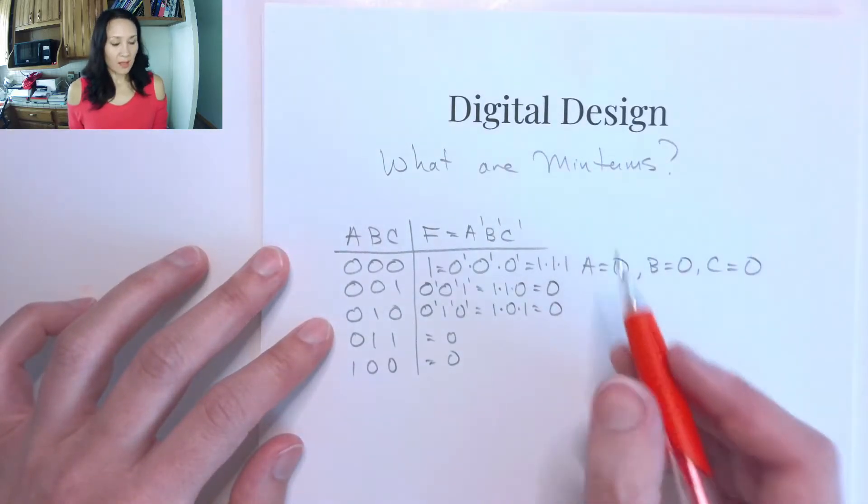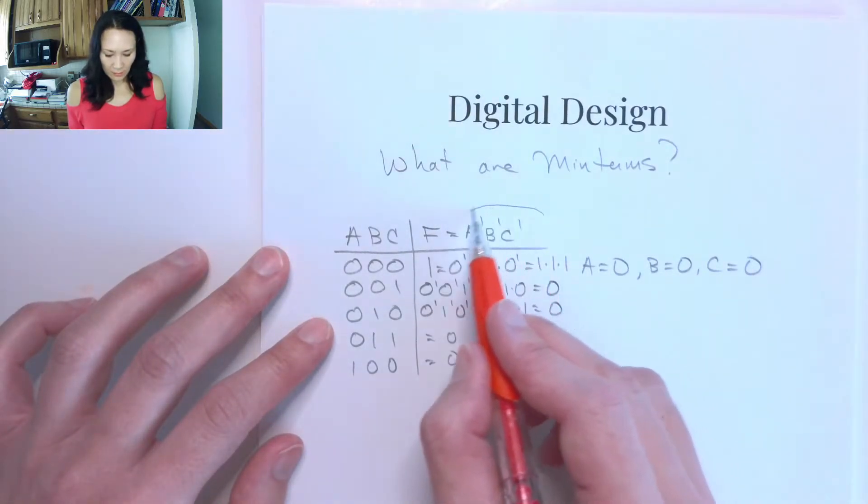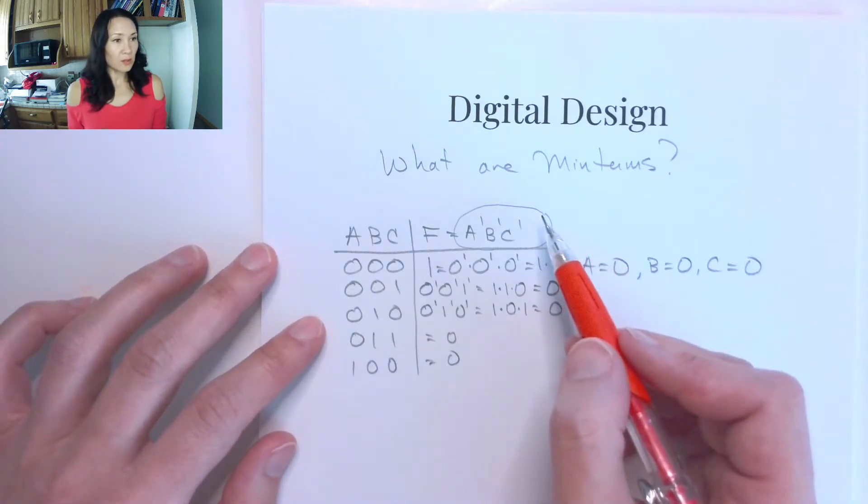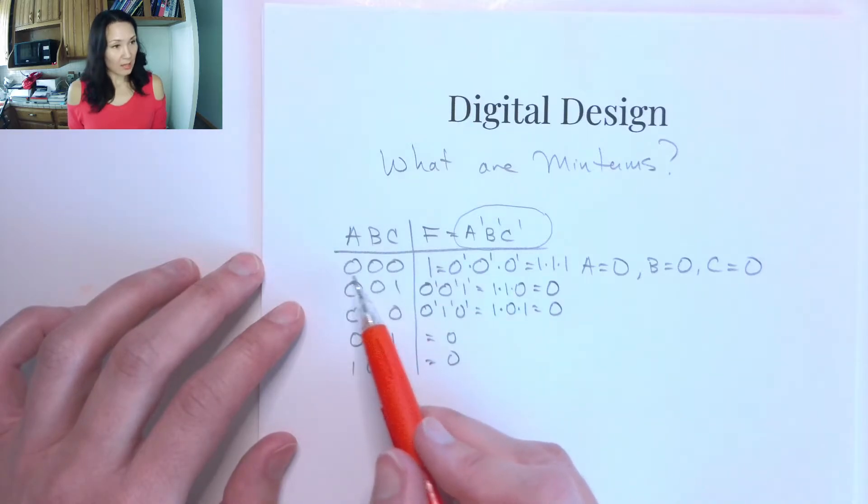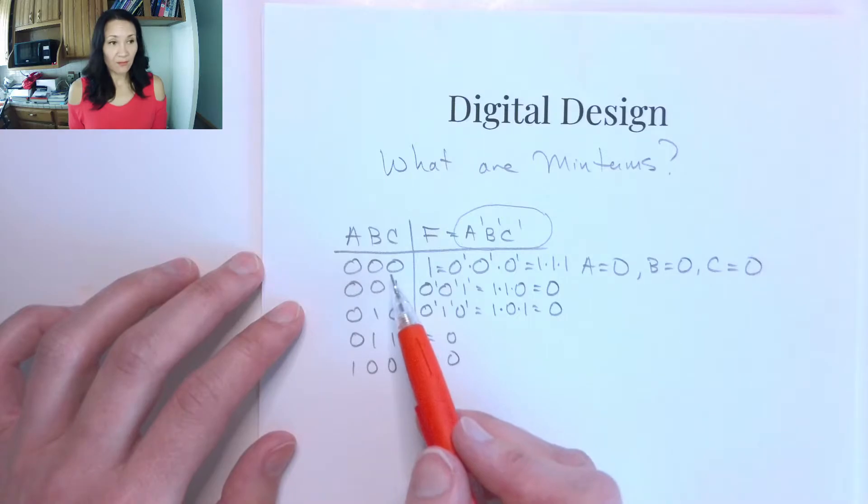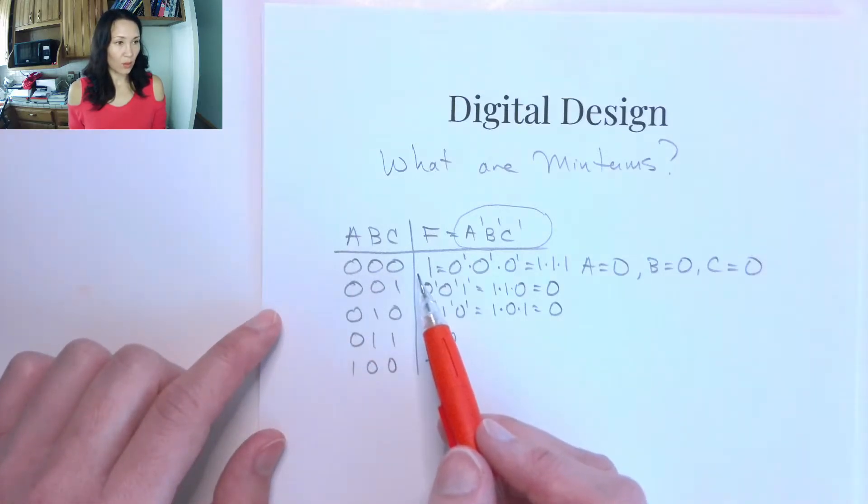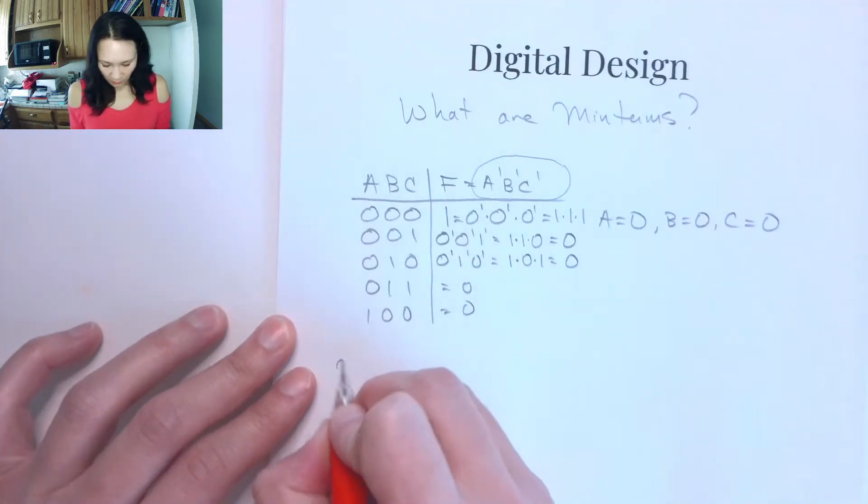So that means that this term right here is the first minterm. And this is a minterm that corresponds to inputs A equals 0, B equals 0, C equals 0. And the definition of a minterm is it's the product term that evaluates to 1. Okay, so let me write that for you.